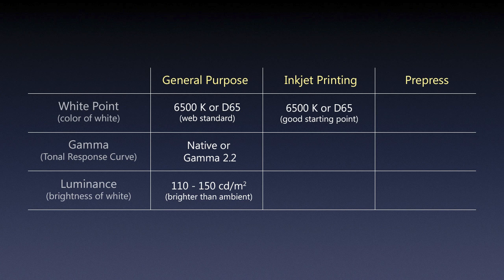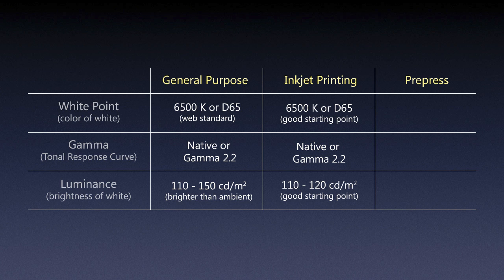For inkjet printing, I would start with D65 as a good starting point because you're trying to match your print to what you see on screen. Then you would lower the white point until you find whatever matches visually to your print. As far as gamma, the same advice applies as for general purpose: go with native gamma if it's 2.2, otherwise use gamma 2.2. For luminance, I would go 110 to 120 cd/m² and then adjust it until you match your print as much as possible.